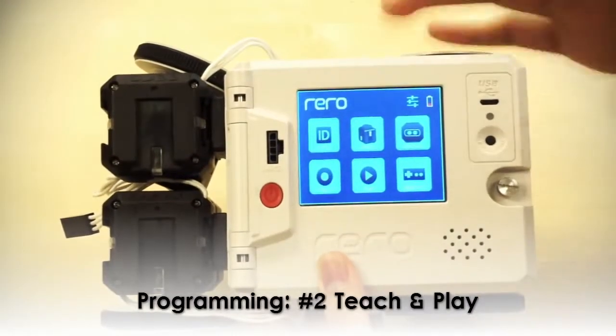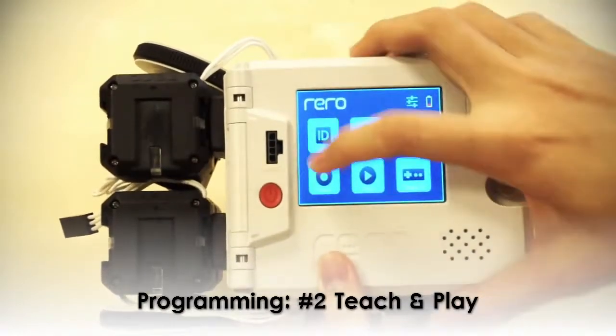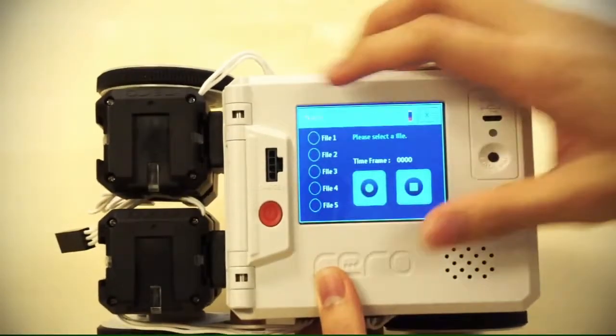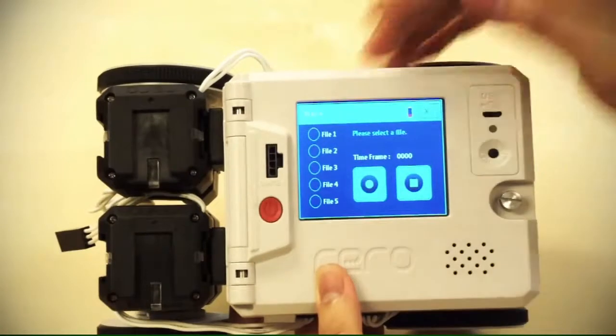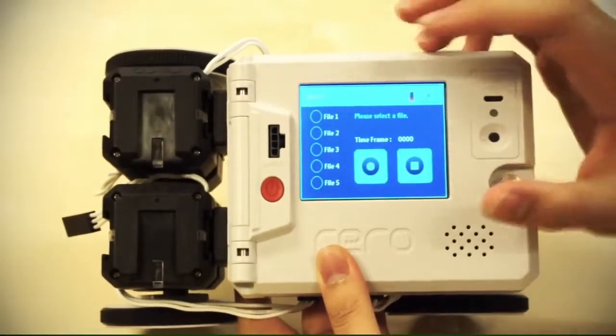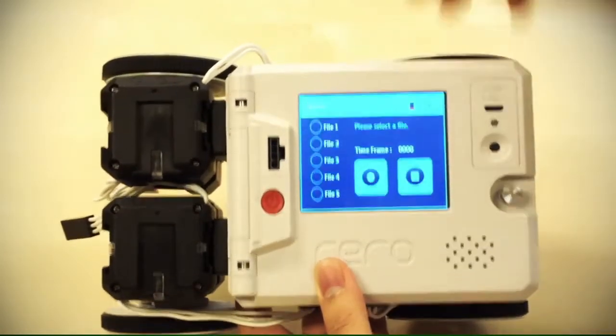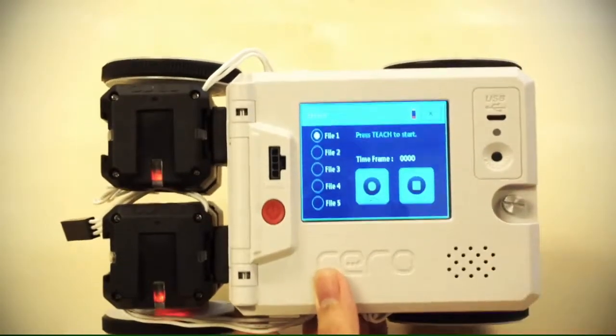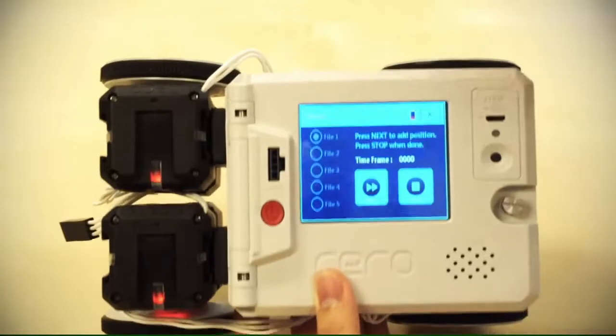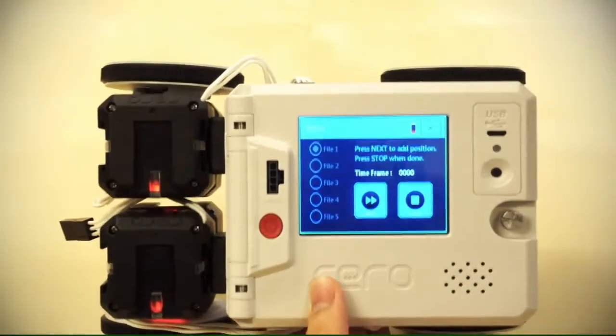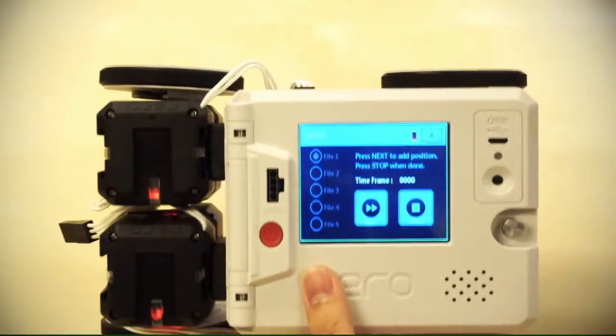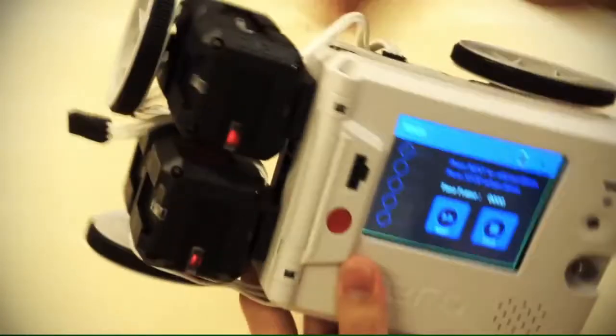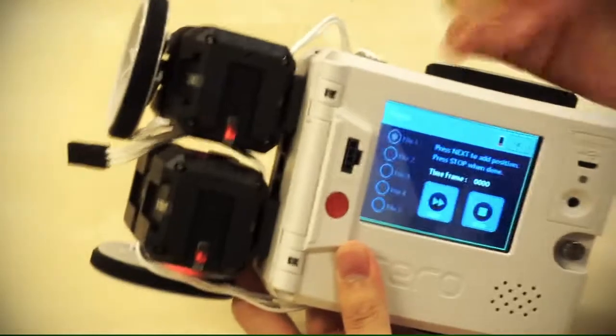Now that we have done with setting the limits for the servos. We can now finally teach the robot what to do. Now to do this, we have to go to teach. So here's where you can teach. You can see there are five files here. It means that you can teach a total of five programs to the robot. Once you can overwrite the programs that you don't need anymore. So let's go with file one. Select file one. And then click teach. So how does this work? Well basically you teach the robot what to do. And then you can play the program. And then the robot will copy the command that you just gave it. So let's say I move the steering here.